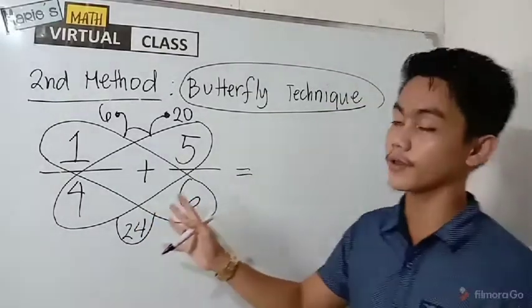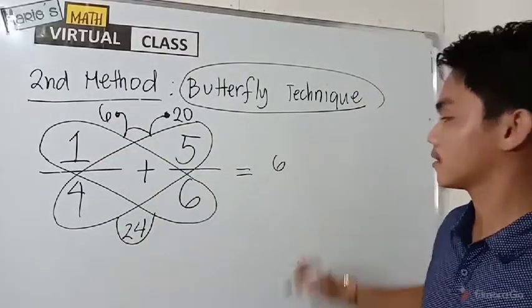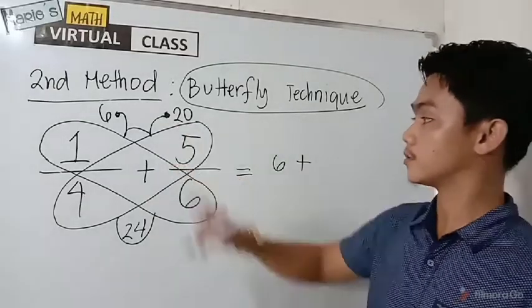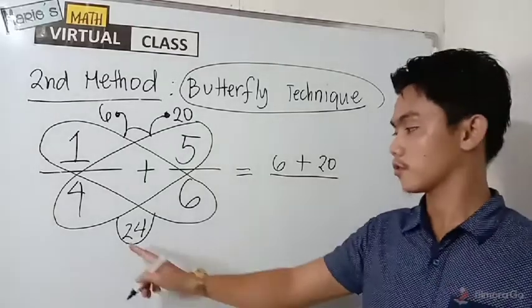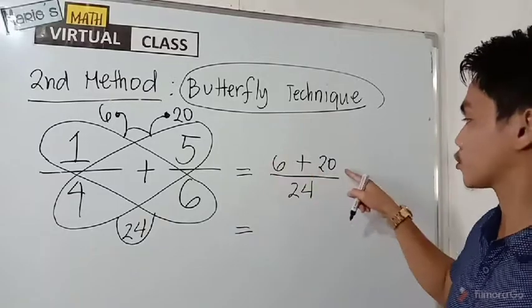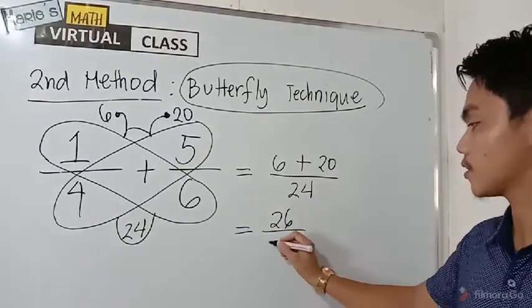So what will be the result? So as you can see, we have a butterfly here. So just copy six, then copy the operation, plus, then twenty, all over twenty-four. Then for the final answer, six plus twenty, it's twenty-six, over twenty-four.